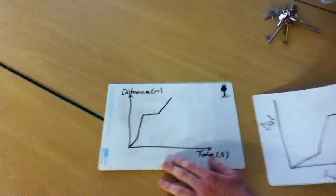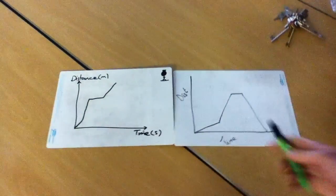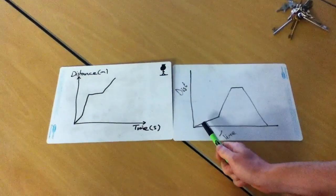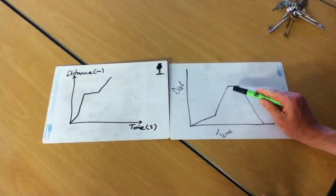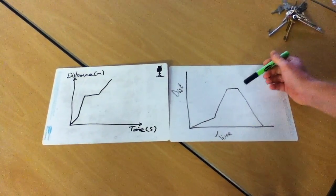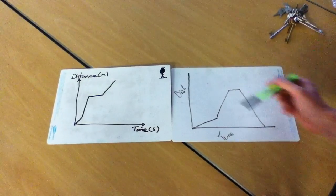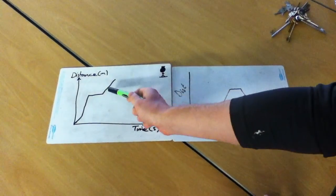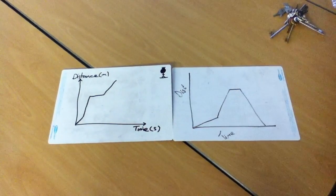Check it out, because this is what he should have drawn. He's got the first bit right — we went medium pace, then I went really fast, then stopped. But look, I've drawn it back down and Dr. Brownhill has drawn it upwards. Can you see where he's gone wrong?